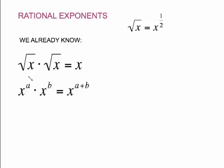One is that the square root of x times the square root of x equals x. Also, you know the exponent law: x to the a times x to the b — we keep the base x and add the exponents a plus b.